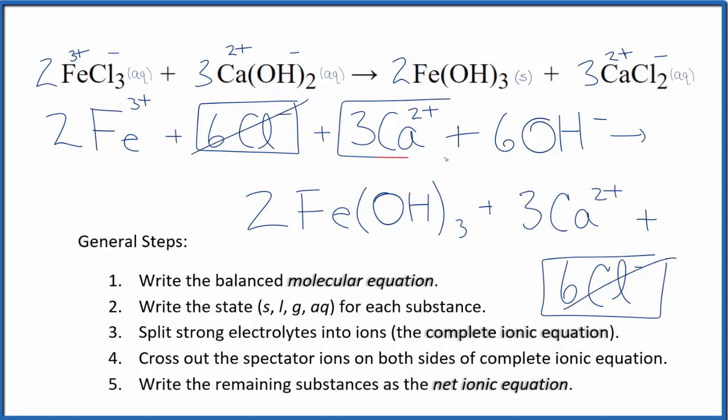And then three calcium ions in the reactants. And then three in the products. Those are spectator ions. We cross them out. What's left, that's the net ionic equation for FeCl3 plus Ca(OH)2.